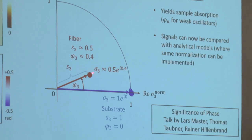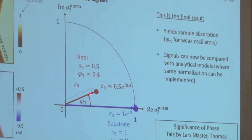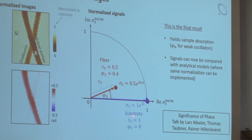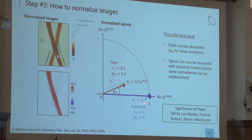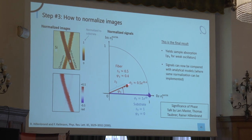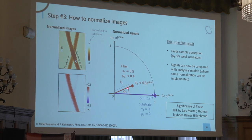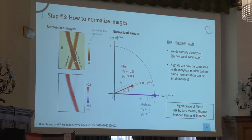After correcting the phase offset, you may still have a phase gradient from interferometer drift. To correct this, take a line profile along a homogeneous substrate region, extract the substrate phase value at each line, and subtract it from the full line in complex-valued form, then take the angle again. The substrate becomes zero phase and the fiber appears as a single arc in the complex plane. To give the amplitude axis meaning, normalize by dividing the complex image by a reference complex value from a known substrate area. Complex division: divide amplitudes and subtract phases. Once done, you have calibrated amplitude and phase that can be used for absorption mapping and modeling.